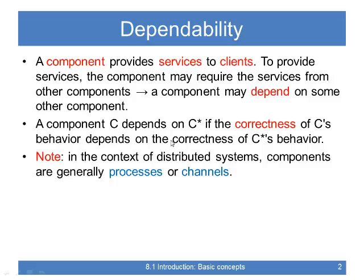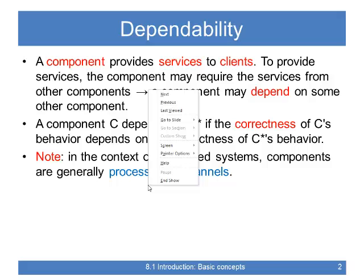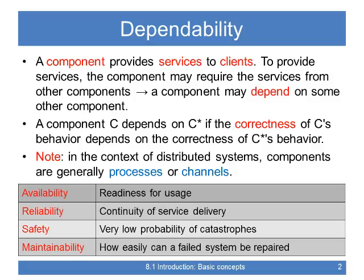A component C depends on another one if the correctness of C's behavior depends on the correctness of that other component. To make it more concrete, in distributed systems we're going to talk about processes and channels. There are four concepts you need to understand: availability, reliability, safety, and maintainability.